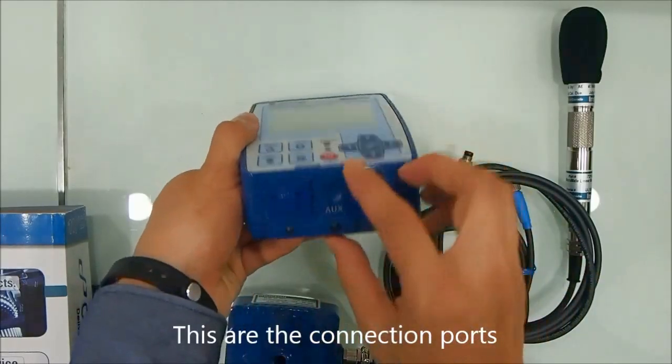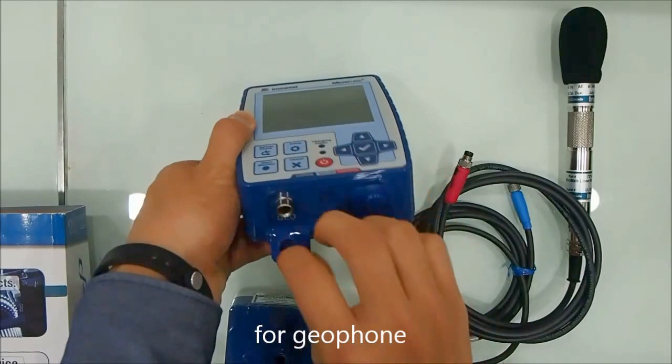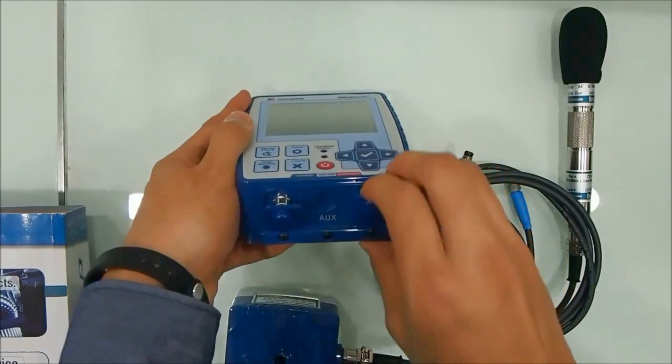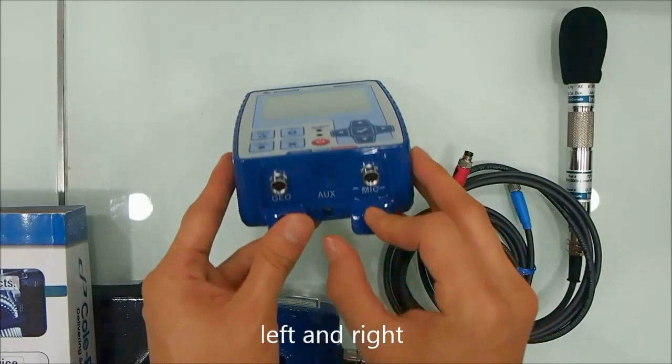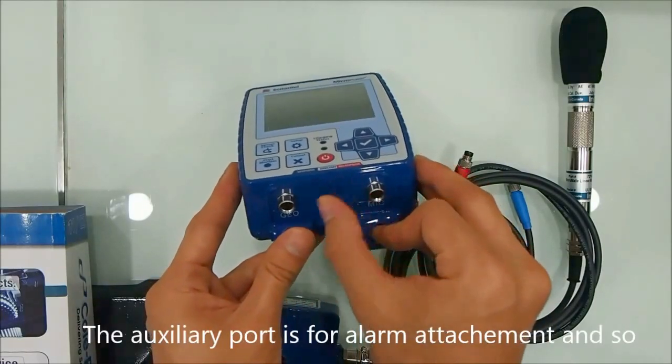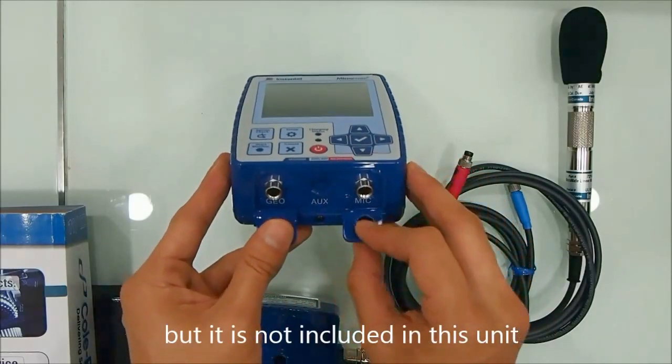These are the connection ports for geophone and microphone left and right. The auxiliary port is for alarm attachment but it is not equipped in this unit.